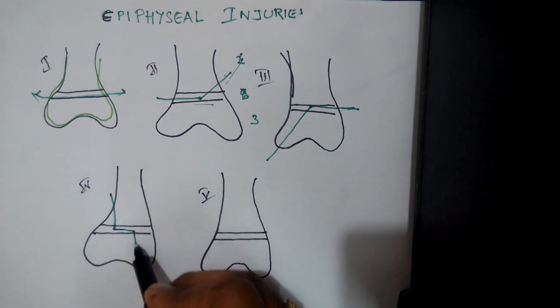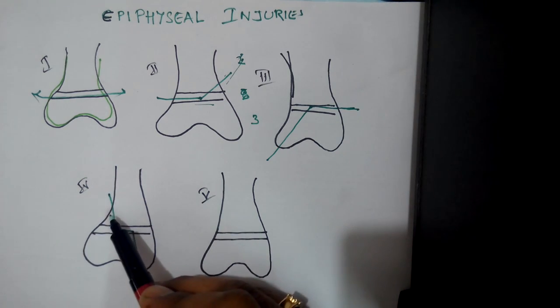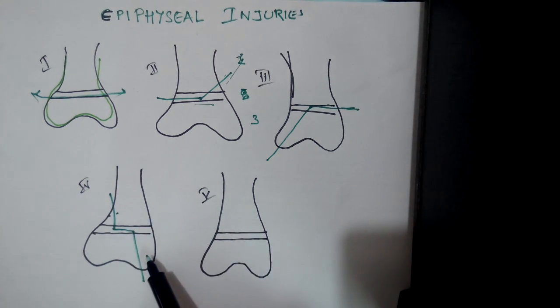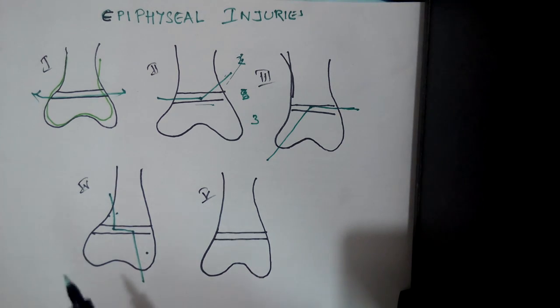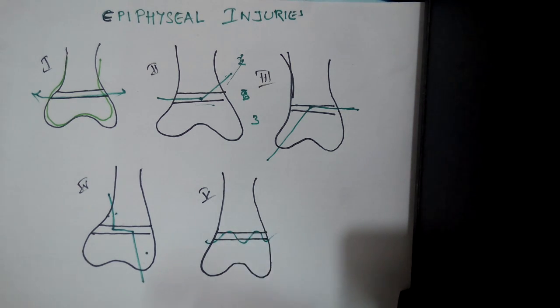You just write the number 4 and this is the fracture. Here we have a metaphyseal beak as well as the epiphyseal beak. This is type 4. Just write the number 4.